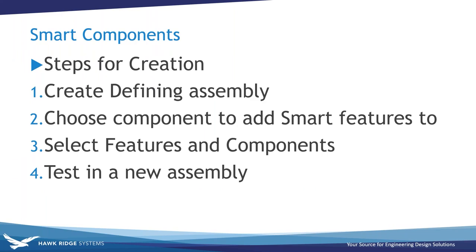These are the steps for creating smart components. You generally create them from components you use frequently that require associated components and features. When you make a component smart, you associate the other components and features with it inside a defining assembly. When you insert the smart component into another assembly, you can choose whether or not to insert the associated components and features. The very first step, just like design library, is to create this defining assembly and make sure it has all the included parts and features. Then you choose a component to make smart and select the components and features you'd like to bring with it.